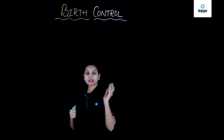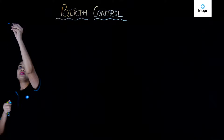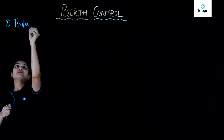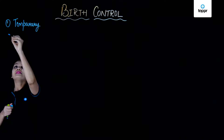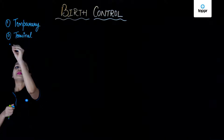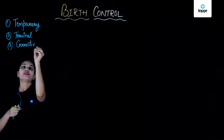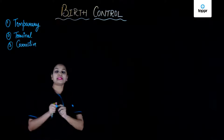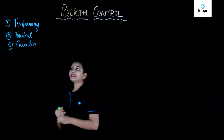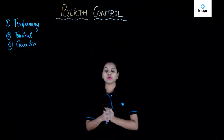Birth control methods are mainly divided into three categories. The first is what we call temporary, the second is called terminal, and the third method is called corrective. In this lesson we are going to focus upon these three methods and see the various subcategories which fall under them. Let's first talk about the temporary methods.